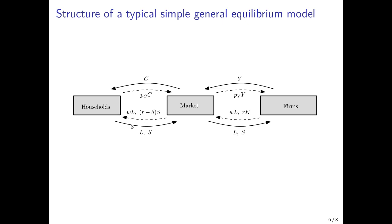The same holds true for labor. If the wage rate is very low, households would not want to supply much labor, while firms would demand many workers — demand exceeds supply, leading to an increasing wage rate. As the wage rate rises, firms demand less labor and households may be willing to supply more. This process continues until the labor market is in equilibrium again. So in general equilibrium, a price vector establishes that ensures all markets clear, and for this market-clearing price vector we can compute the associated quantities.